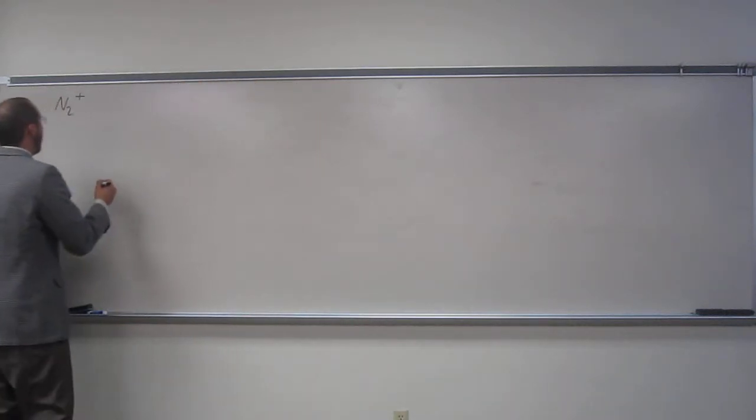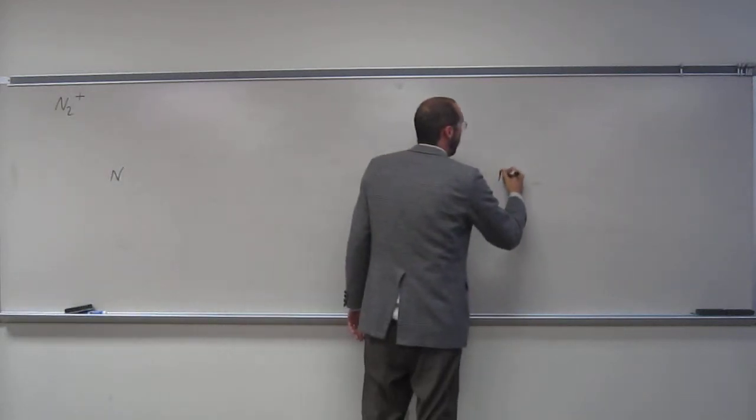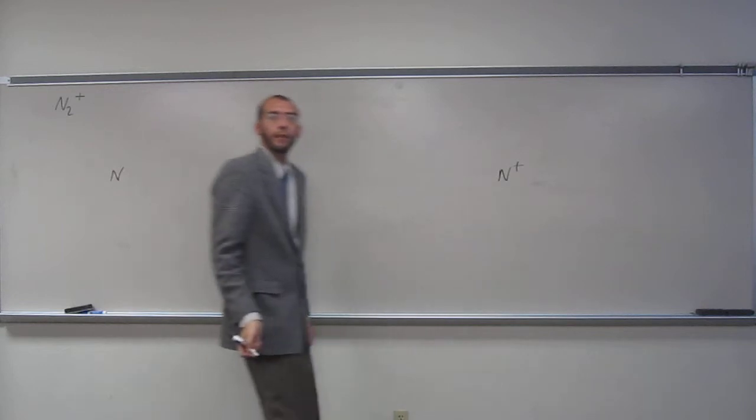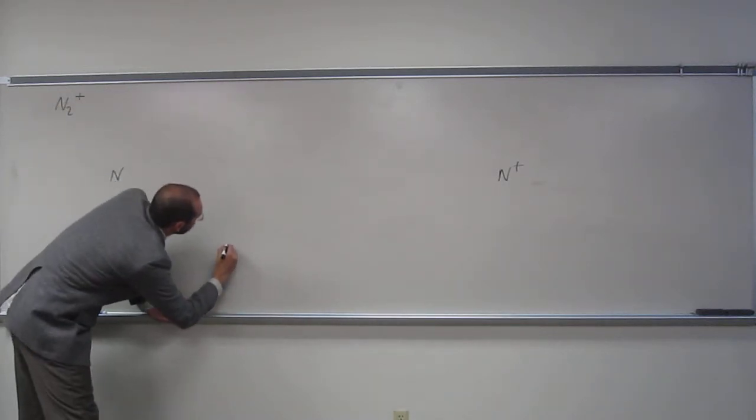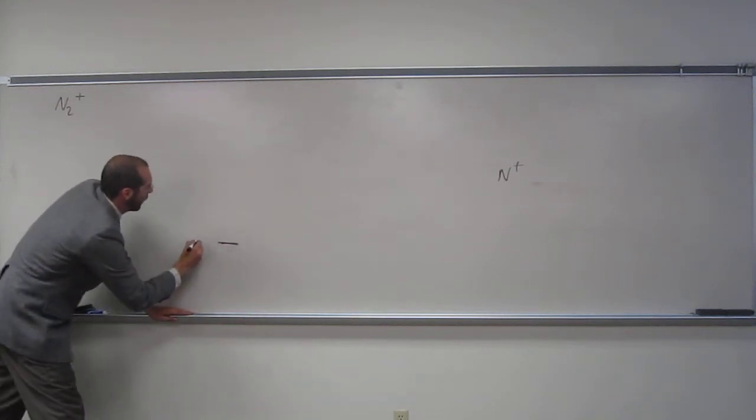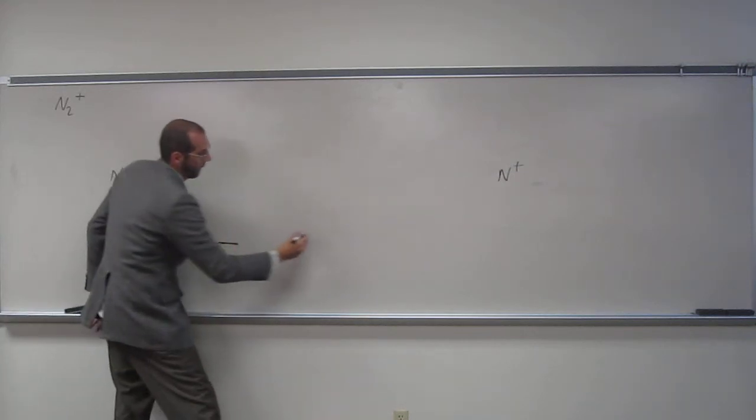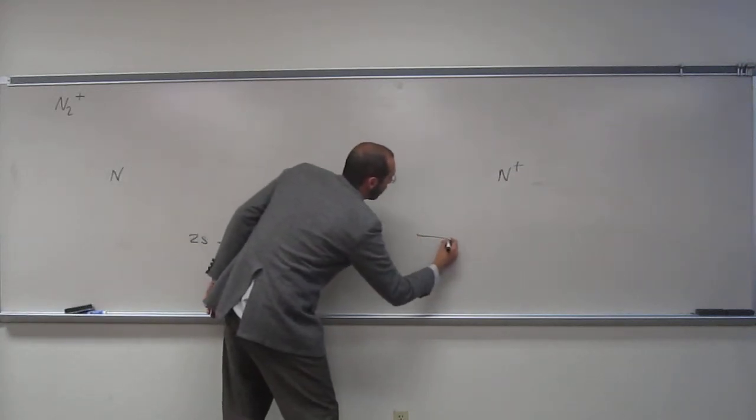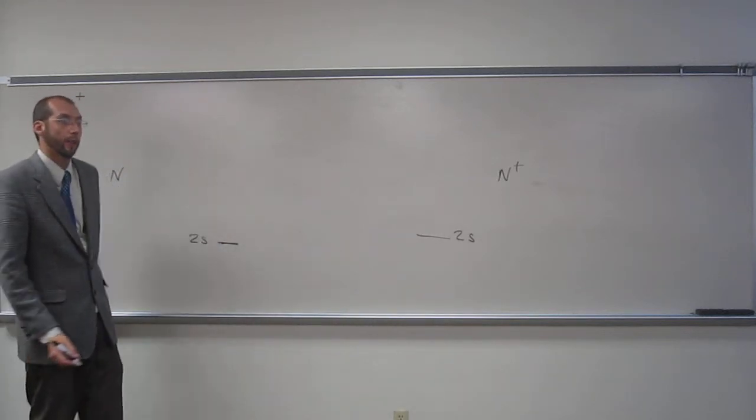So N2+, you're going to have N combining with N+, right? Is everybody okay with that? So down here, and you'll see why I don't like to do these because I'm too tall. So 2s down there, 2s down there. Remember we're only using the valence electrons.